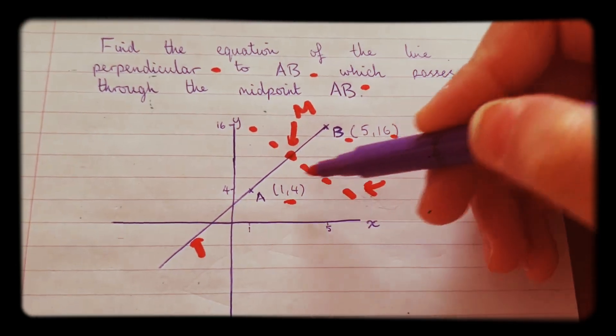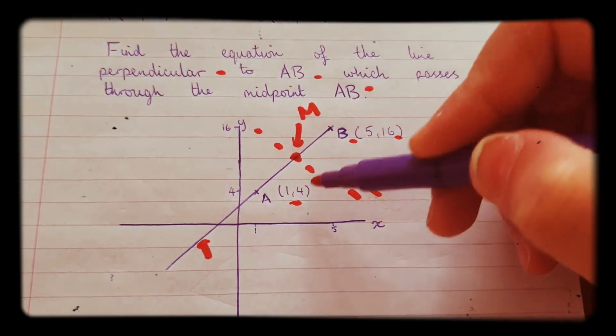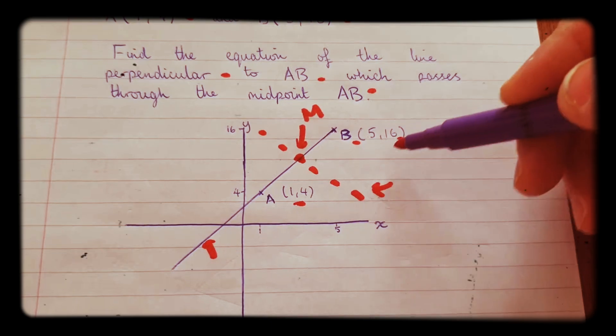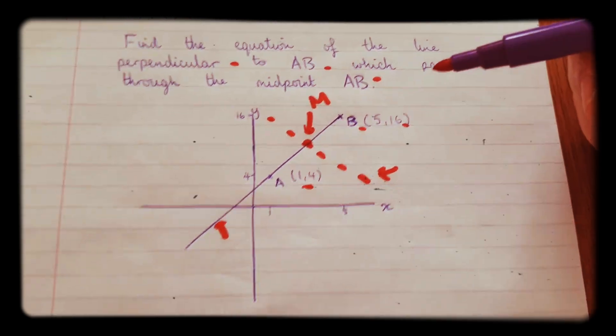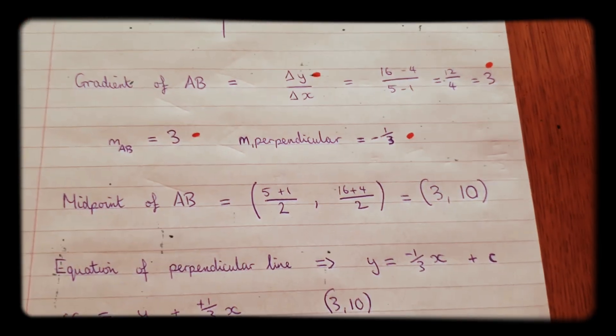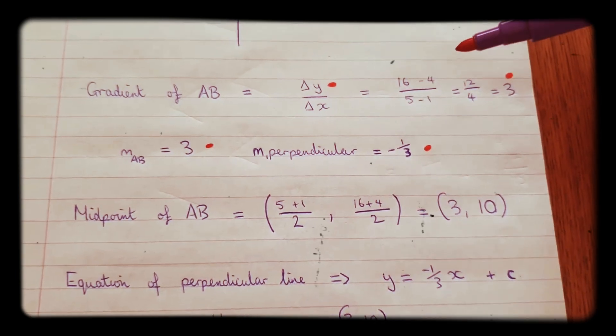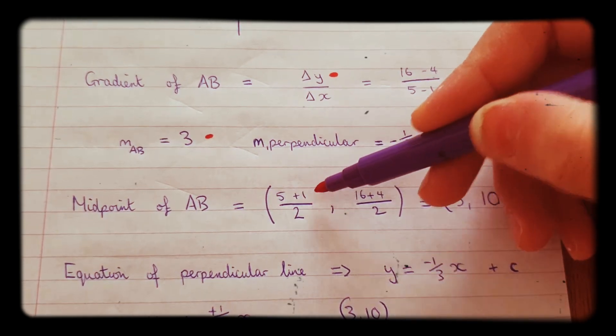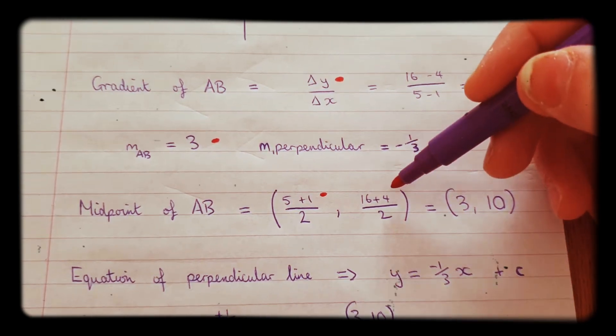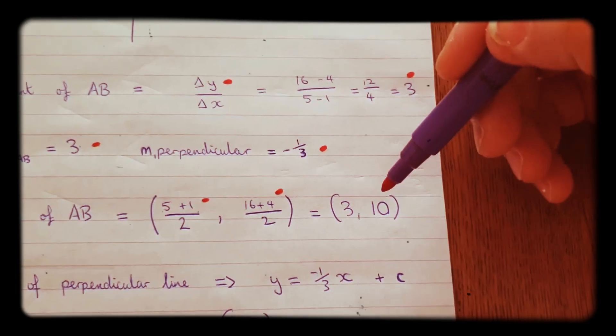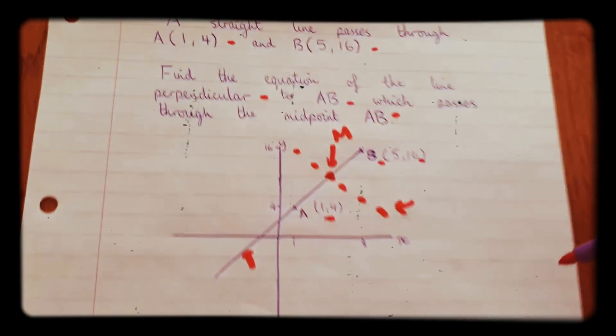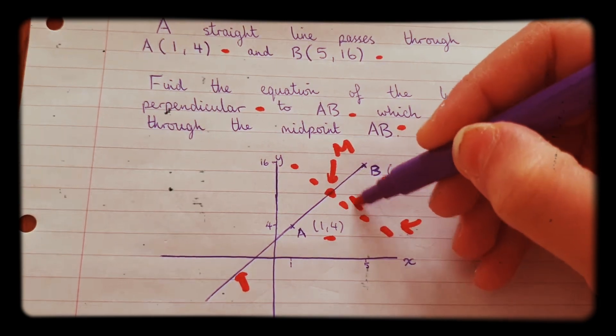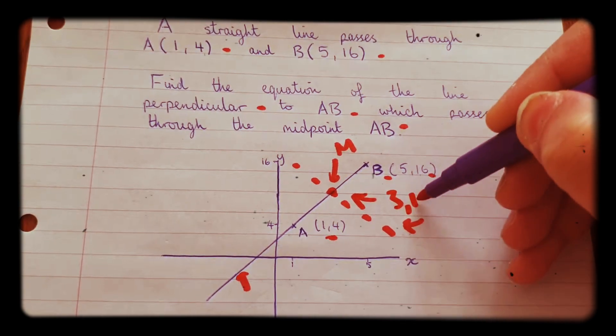What you do is you add up the X's and divide by 2, and add up the Y's and divide by 2, and then you'll be left with the coordinate. So the midpoint of line AB is (5 plus 1 over 2, 6 plus 4 over 2), and then you'll be left with (3,10). So that point there is (3,10).